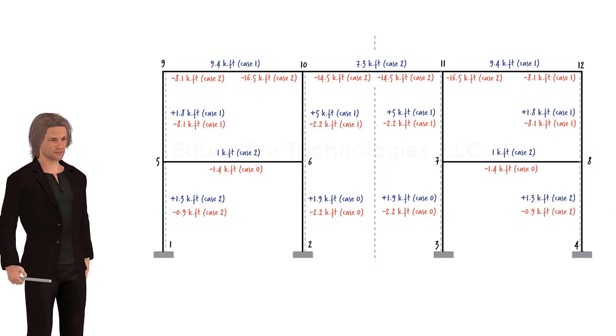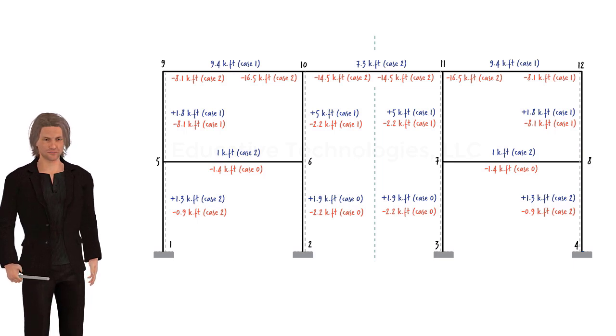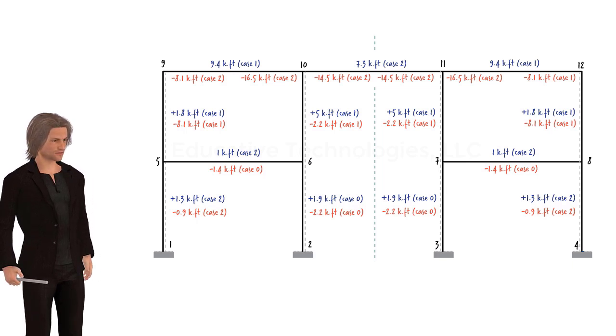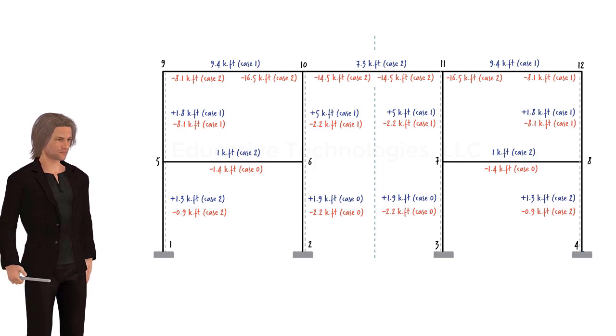This concludes our discussion on the treatment of snow load per ASCE 7-16. Needless to say, if we were to actually design this building, we would consider other load types and load combinations to ensure the safety of the system under dead load, live load, wind load and other relevant loads that would govern the design of the house.